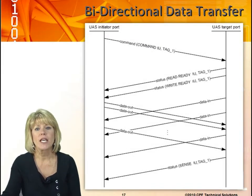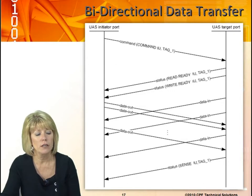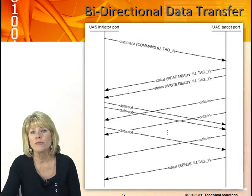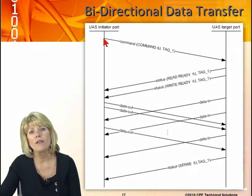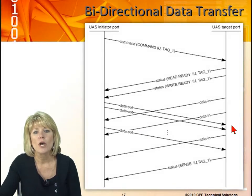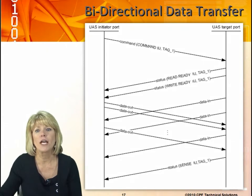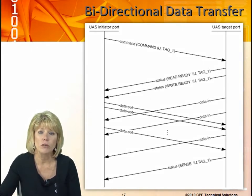Here's an example of bidirectional data. Because we have a transmit pair and a receive pair, the previous examples only showed data flowing in one direction. But data can actually flow in both directions. Here we've got the command sent to the target port — it was a read command. On the status pipe there's a read ready command, but also a write ready command. Data flows in both directions, and there will always be an acknowledgement on the status pipe at the end of the transmission. It doesn't have to be unidirectional.